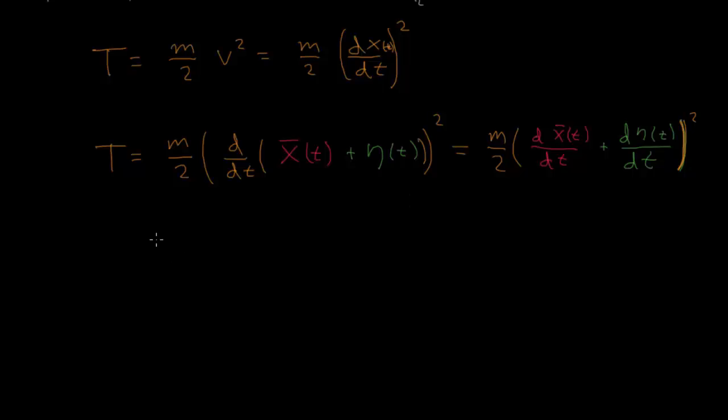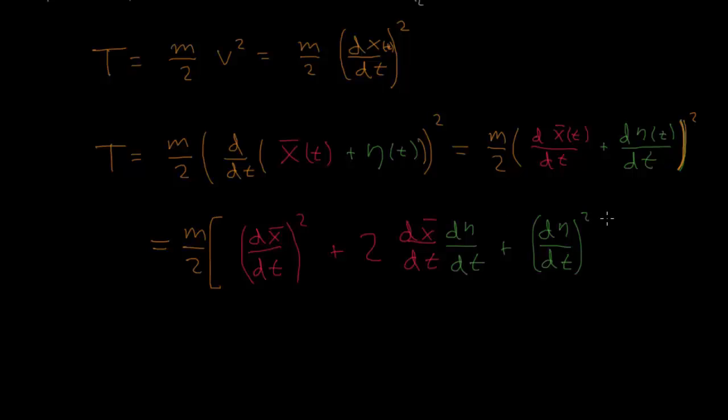And now if we evaluate this square here, we will get T equals m over 2. I will make a box here. dx bar dt squared plus 2 times dx bar dt times d eta dt plus d eta dt squared. Right, so all I have done is I have foiled out this binomial.